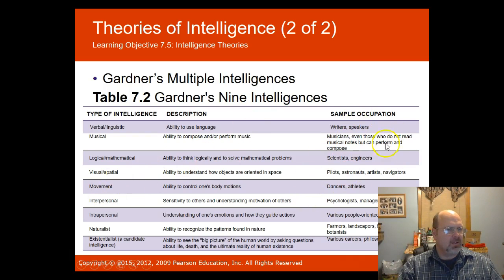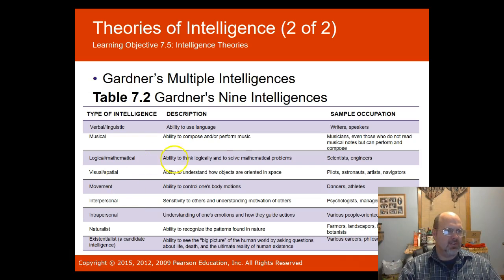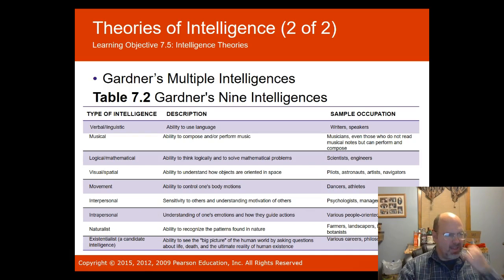Other multiple intelligences include movement intelligence — for athletes — and interpersonal intelligence, which involves connecting with other people and sensitivity to others. Psychologists would make good use of strong interpersonal intelligence. Intrapersonal intelligence is understanding your own emotions and how they guide your actions. Naturalist intelligence is the ability to recognize patterns found in nature, and existential intelligence is the ability to see the big picture.